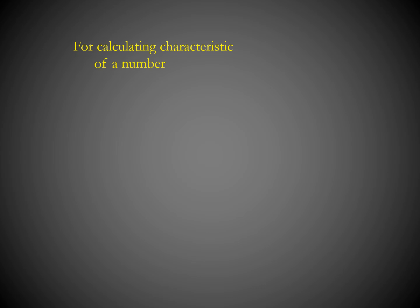For calculating the characteristic of a number, let's do some questions. Find the characteristic of log 20: count the digits before the decimal — there are 2 digits — subtract 1, giving characteristic = 1. For log 3156: count the digits — there are 4 — subtract 1, giving characteristic = 3.